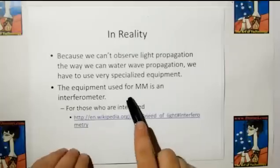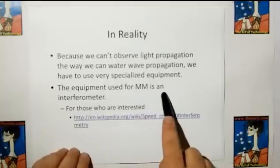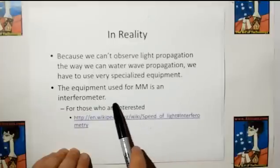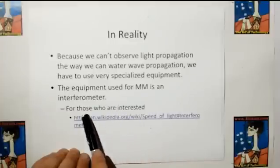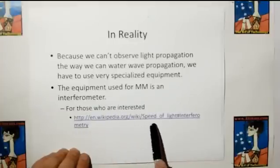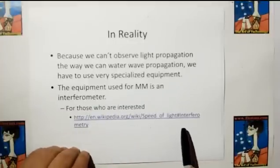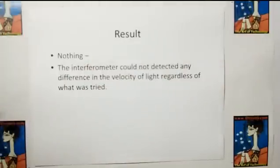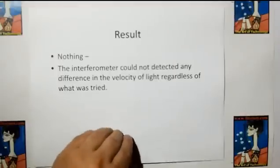The equipment used for the Michelson-Morley experiment is an interferometer. I'm not going to get into how an interferometer works — that's a whole other video — but you can look it up on Wikipedia. The result? Nothing. The interferometer could not detect any difference in the velocity of light regardless of what was tried.